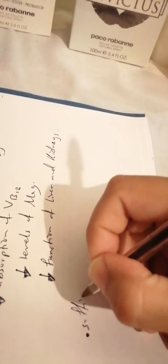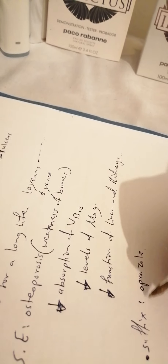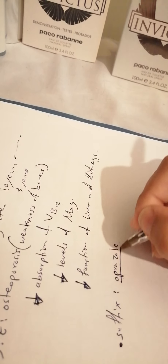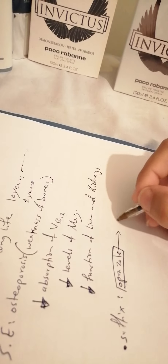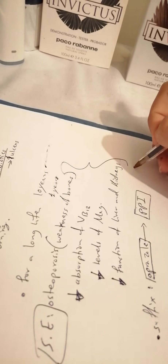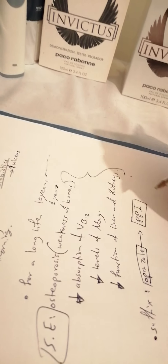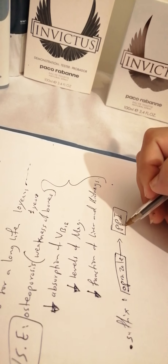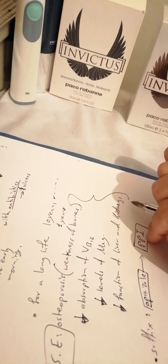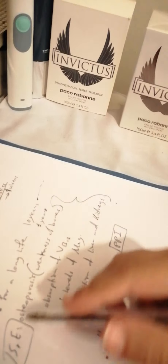Now I want to tell you about the suffix of PPIs. The suffix of PPI is '-oprazole.' So if you see any medication that ends with this suffix, you know it is a PPI, and you know PPIs have these side effects. You just need to know the suffix and the medication classification, and keep in mind the side effects.